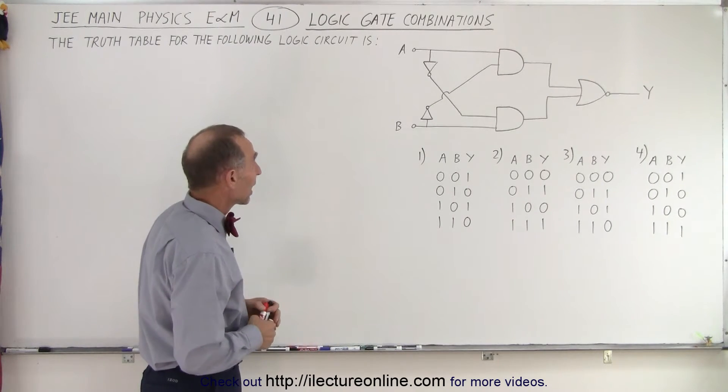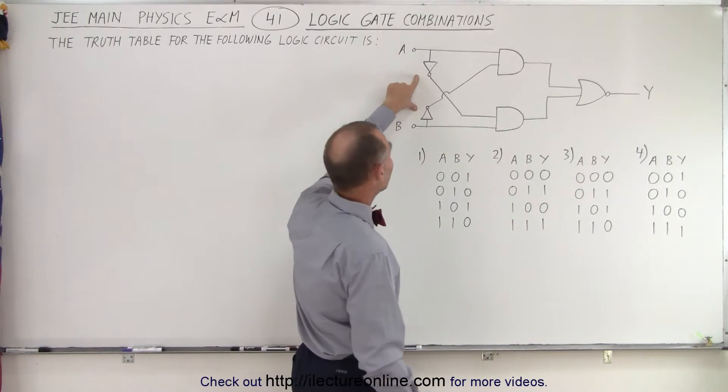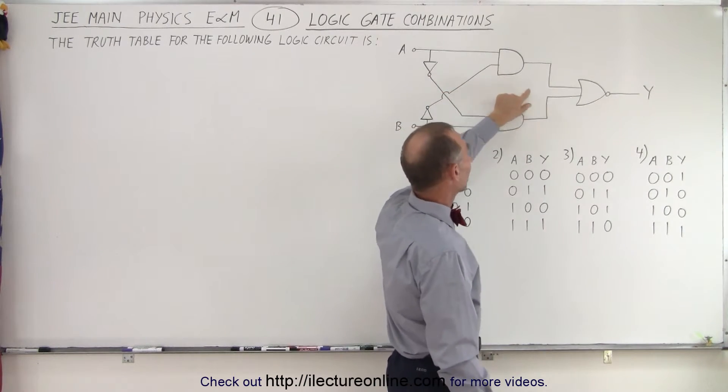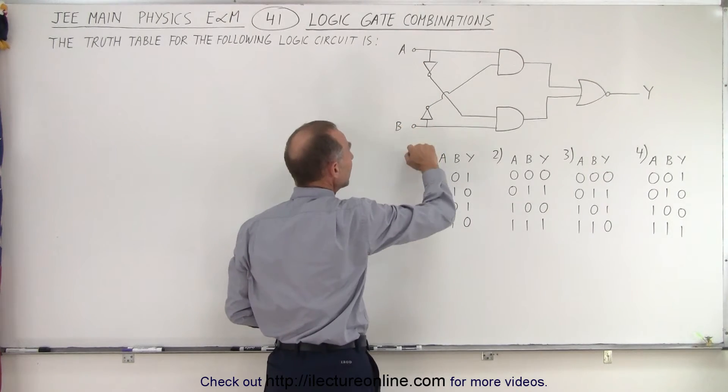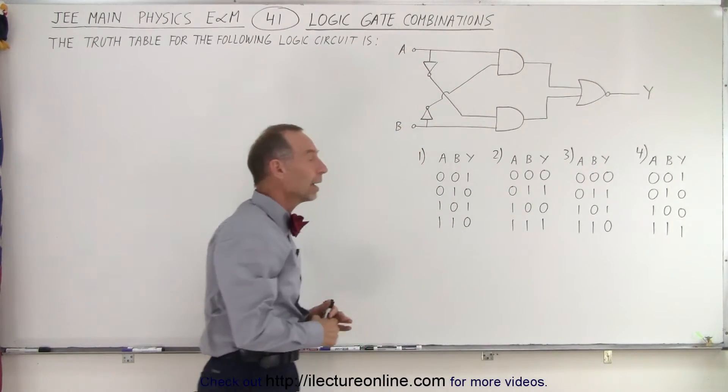So what we have here is we have two NOT gates, we have two AND gates, and a NOR gate. And so we have signals going in at A and B, and we're trying to figure out what the output is at Y.